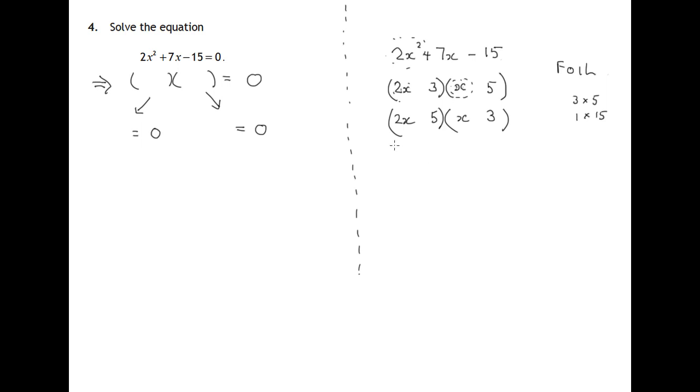We could have a 5 there and a 3 there. There's another possibility with the 2x and the x there where we use a 1 and a 15. Or again, different possibility, swapping these round: 15 and 1. So really we have only these four choices.